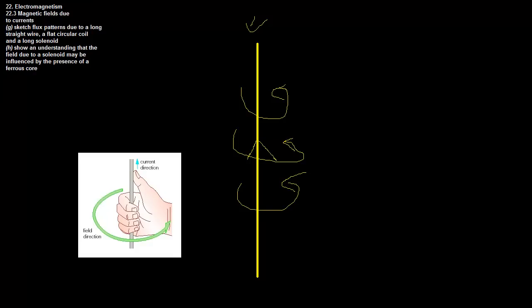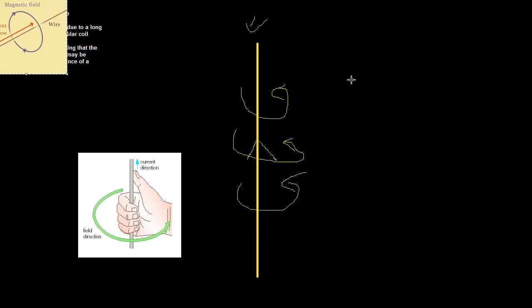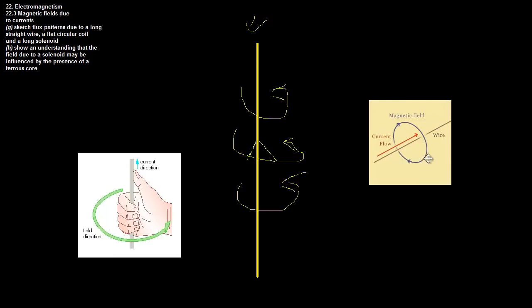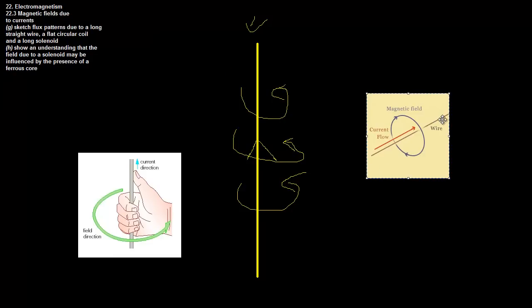We want to sketch flux patterns due to a long straight wire. A long straight wire really looks like this - it is the same thing: current going across with magnetic fields just making circles around it.